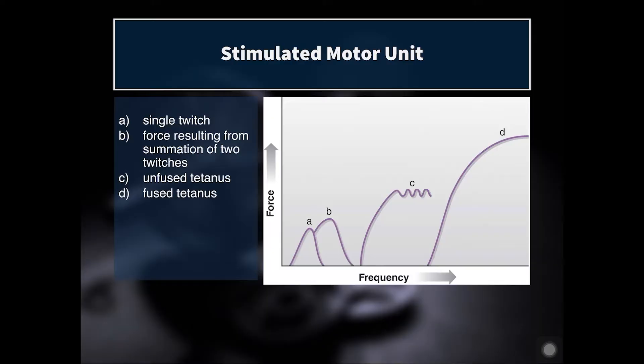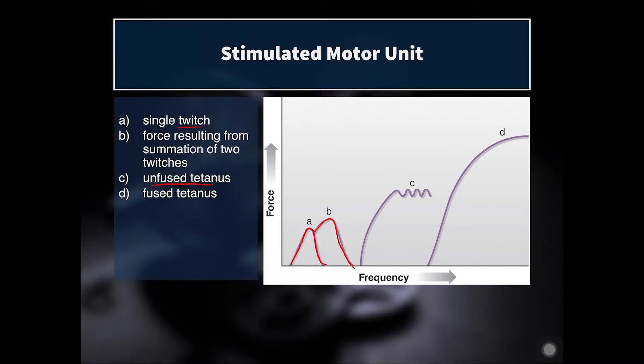To understand how we grade force, first we have to understand what happens when a motor unit is stimulated. If a motor unit is stimulated a single time with a single action potential, that is called a twitch — a single twitch — and it generates a little bit of force that then dissipates. If you have a second twitch occurring before the first twitch is fully dissipated, you call that the summation of two twitches. If you have a continuous twitch that's fast enough so one twitch occurs before the force of the first is dissipated, but not quite fast enough to continue rising in force, you call that unfused tetanus.